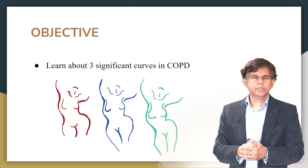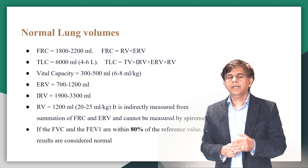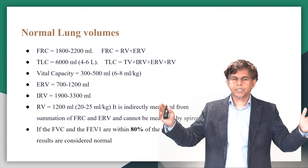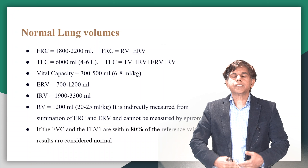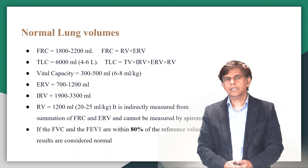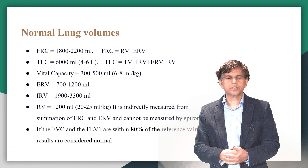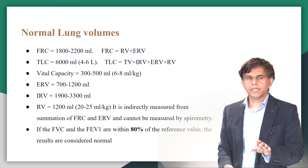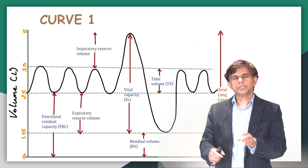Before we go into the curves, it's good to understand some key numbers and terms. You have functional residual capacity, around 1800 to 2200. You have total lung capacity — what stays in the lung. You have vital capacity — where you ask the patient to take a deep breath and blow it out completely. Then you have expiratory reserve volume, inspiratory reserve volume, and residual volume.